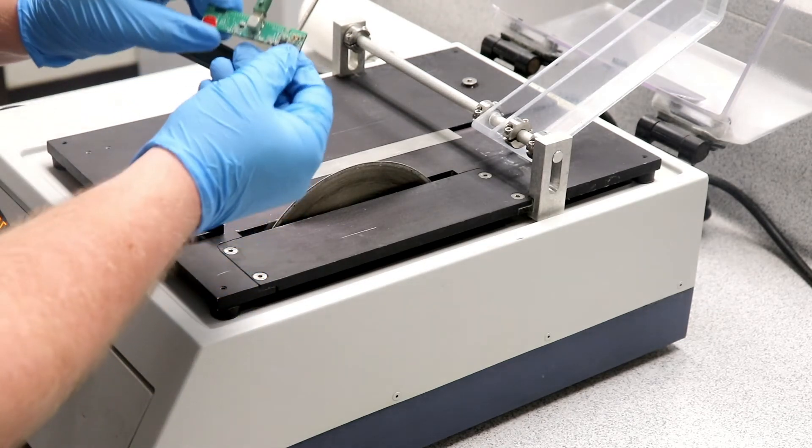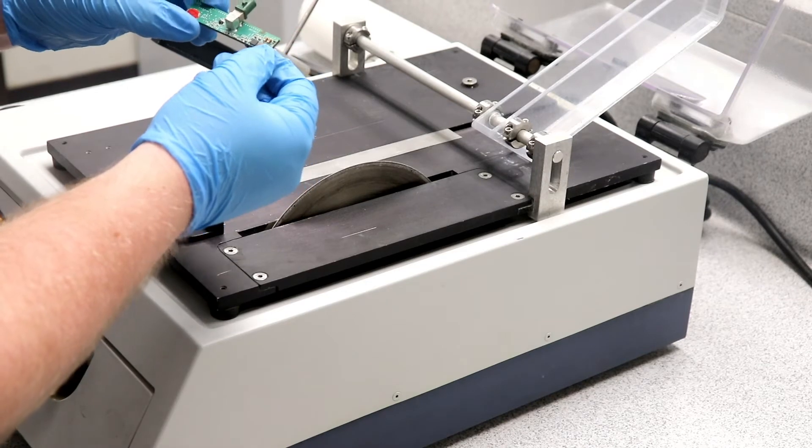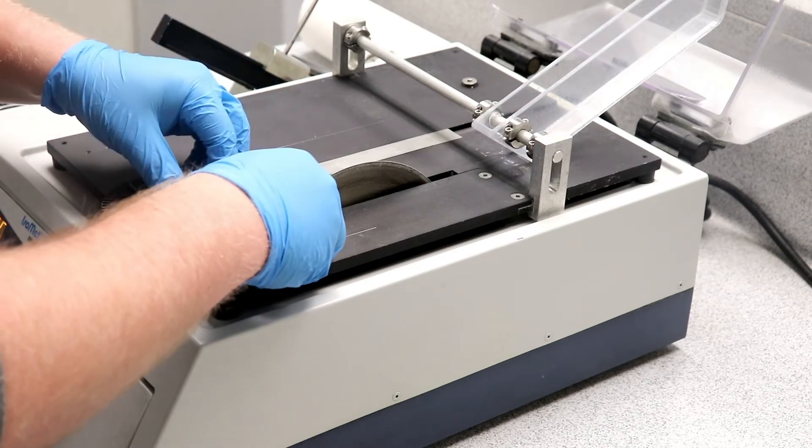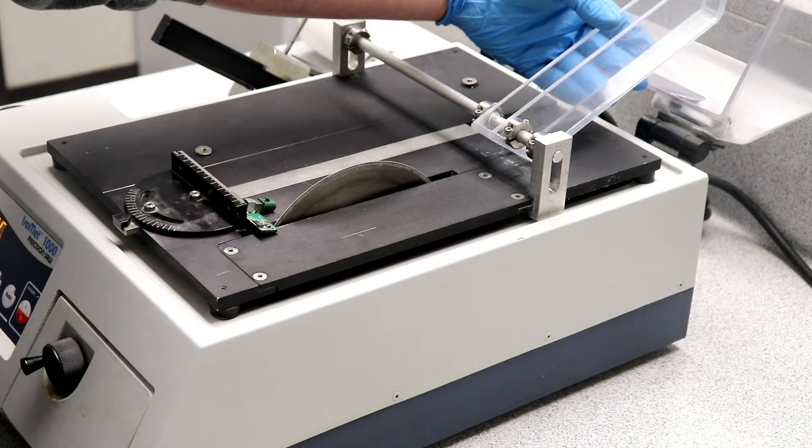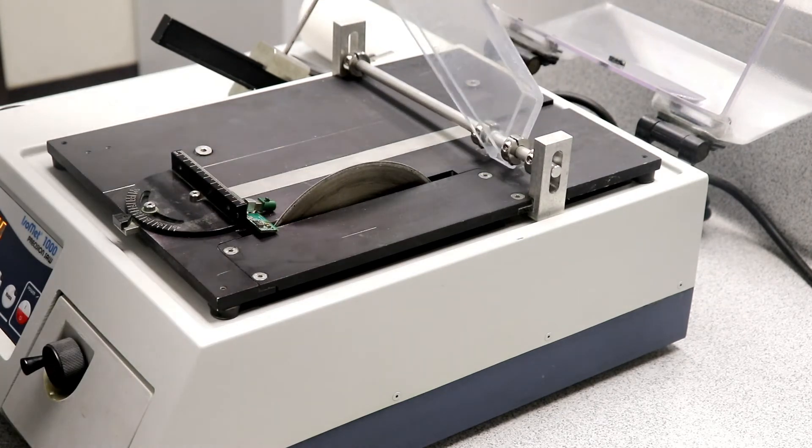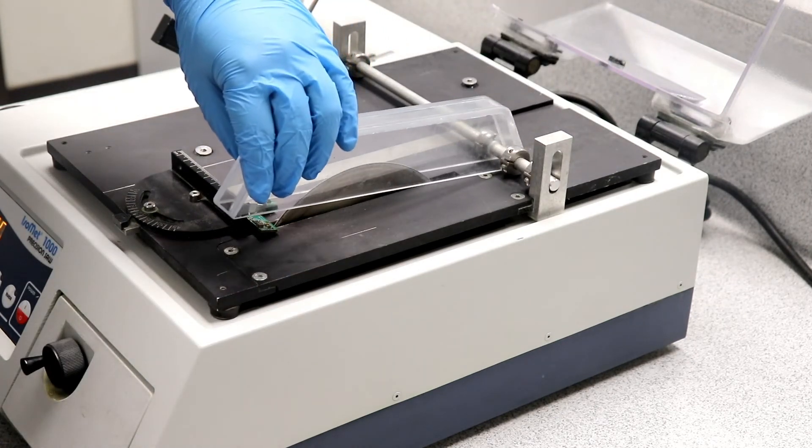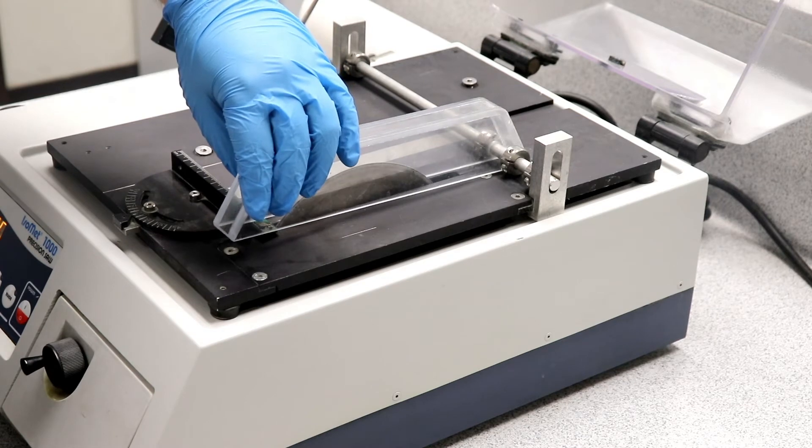So we have a little piece of printed circuit board right here that we're going to use today. Just going to set it up right here. We're going to move this guard down onto the blade. This is very important just to keep some safety. It's going to rest on the part itself.